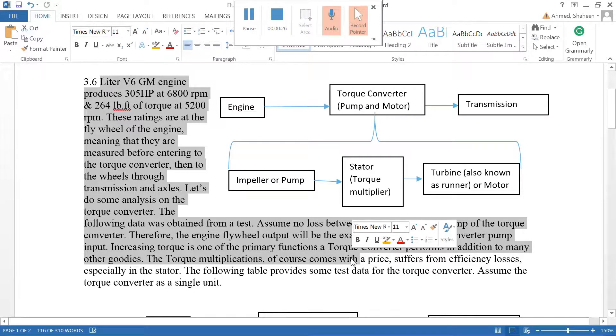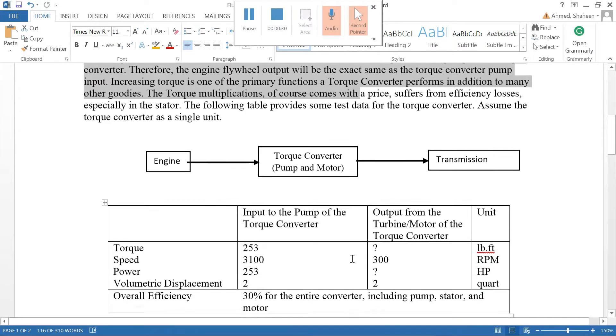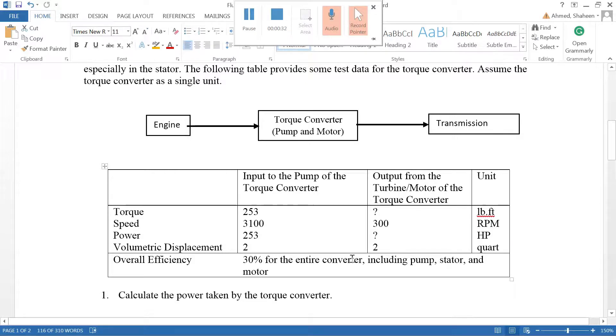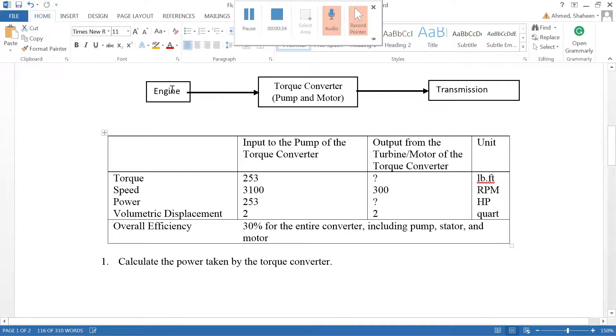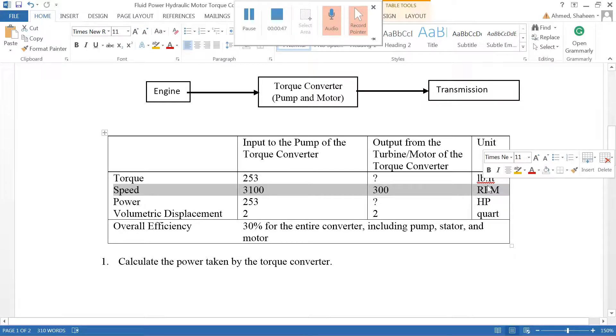I have simplified the problem here. You got the engine, the torque converter, and the transmission. This is how this thing is connected. The torque is 253, speed given for both the torque converter and the pump side.